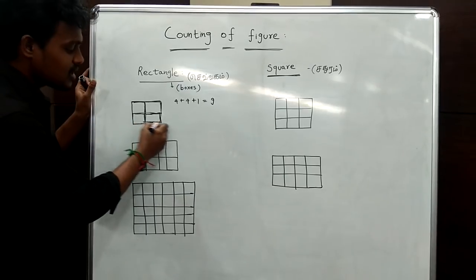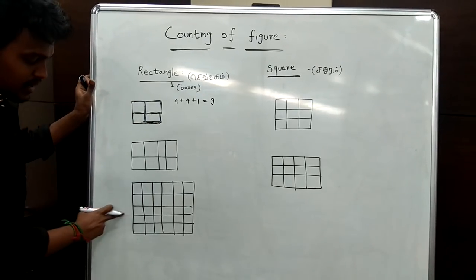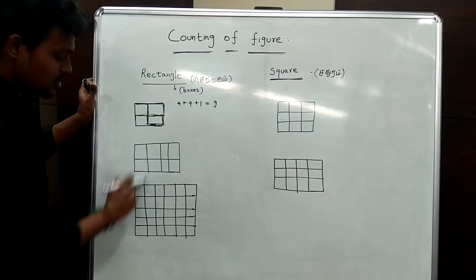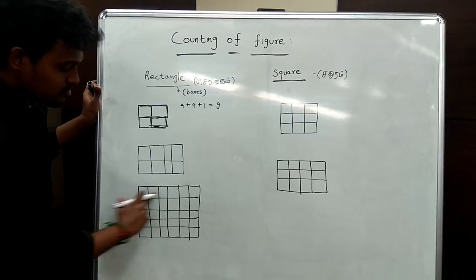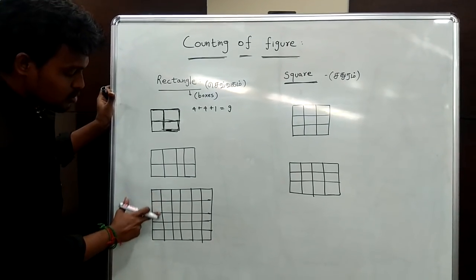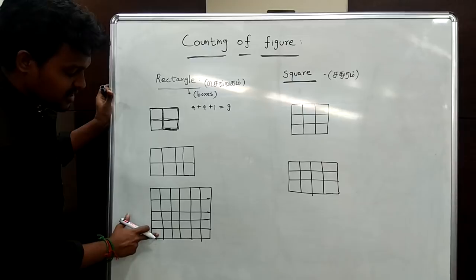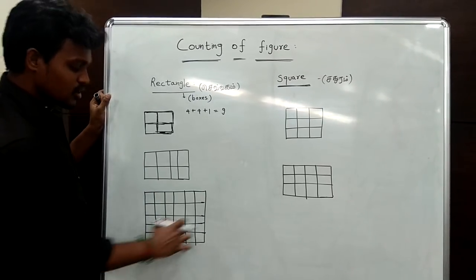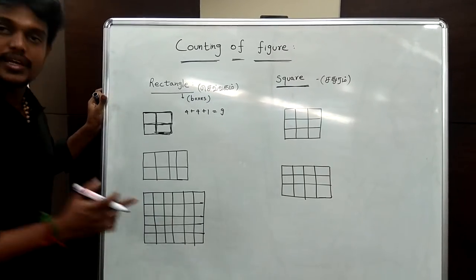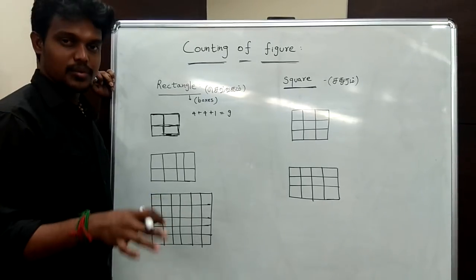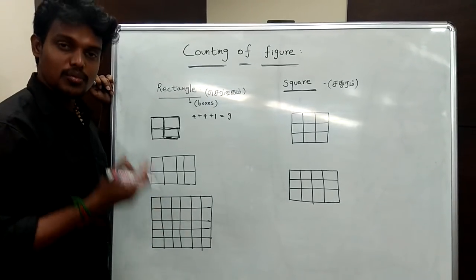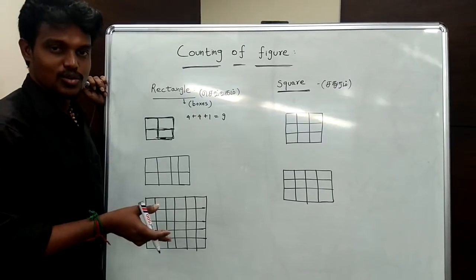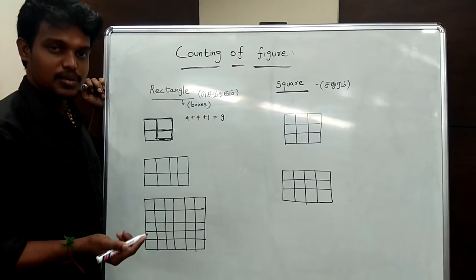Suppose it's complicated. If you count the rows — 1, 2, 3, 4, 5 rows — and columns — 1, 2, 3, 4, 5, 6 columns — if you do it that way, it takes time. So if you use the shortcut, you will get the answer faster.